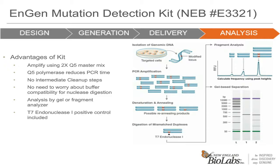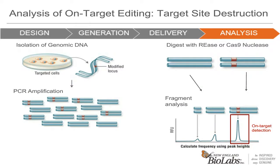An alternate method of analysis of on-target editing is target site destruction. This takes advantage of either restriction enzyme sites or uncut Cas9 sites. There is no denature and anneal step after PCR — you go directly to digestion with either a restriction enzyme or Cas9 using the targeting guide you already have. The digested fraction represents the unmodified DNA while the uncut fraction represents the mutated fraction. One of the benefits of this method is that you would already have the Cas9-sgRNA complex on hand and would now be using it in vitro.